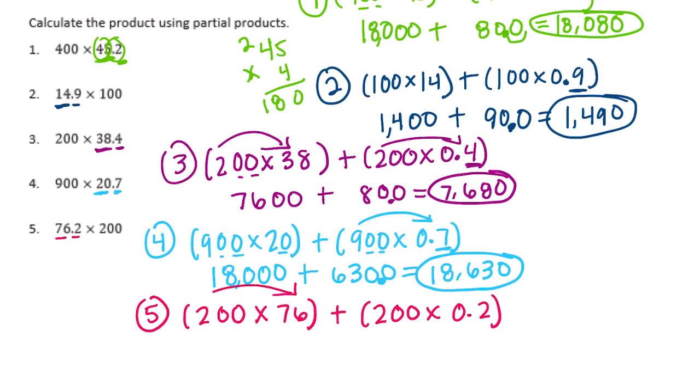Plus 200 times 0.2. 2 times 2 is 4 with 2 zeros, but we need to divide it by 10, so it's 40. So 15,200 plus 40 would be 15,240.